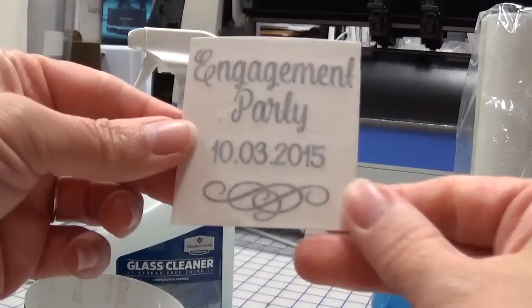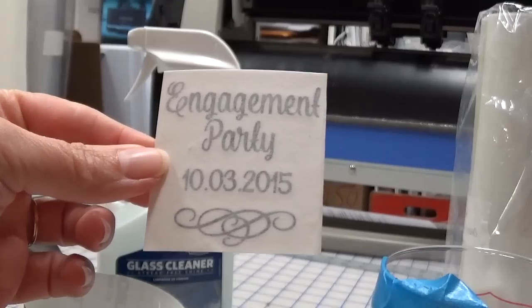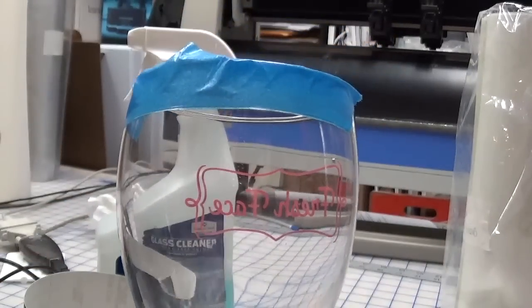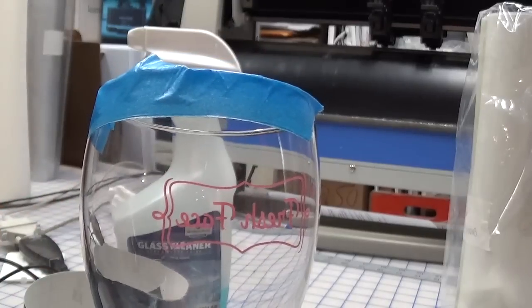When you get your decal it's going to be a rectangle or square. We're going to make sure our wine glass is nice and clean, either using window cleaner or rubbing alcohol.